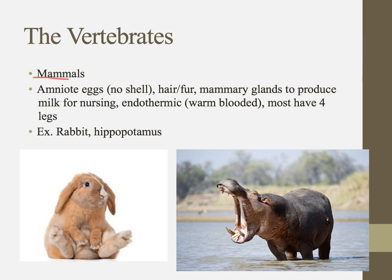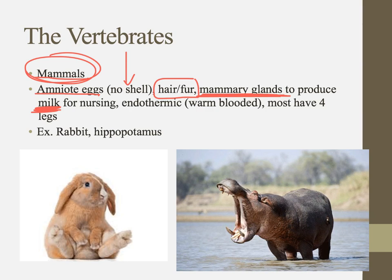Finally, mammals also have amniotic eggs, but with no shell around them. They have hair or fur — something we haven't seen in any other class. We get the name "mammals" from the fact that they have mammary glands to produce milk for nursing their young. They are endothermic, or warm-blooded: they use their metabolism to control body temperature. Most have four limbs — and humans have four limbs even if not four legs. Examples include rabbits, hippos, and people.